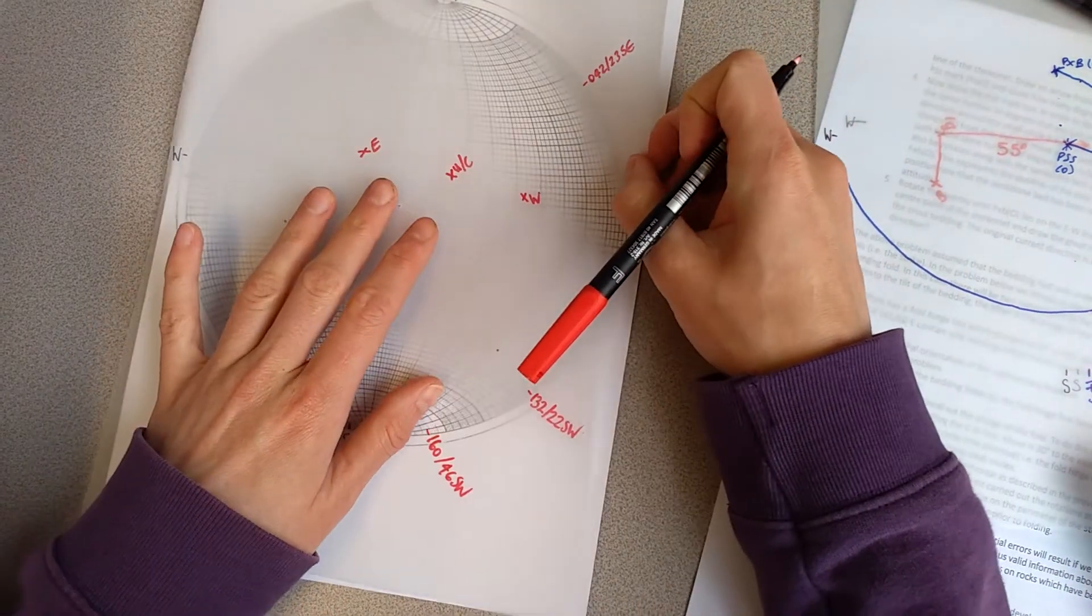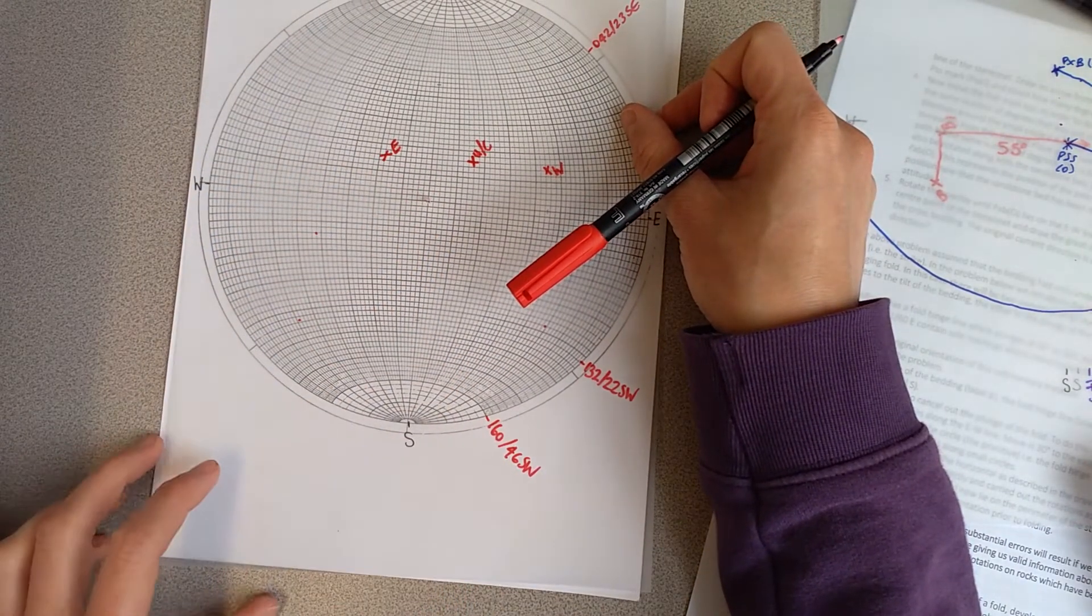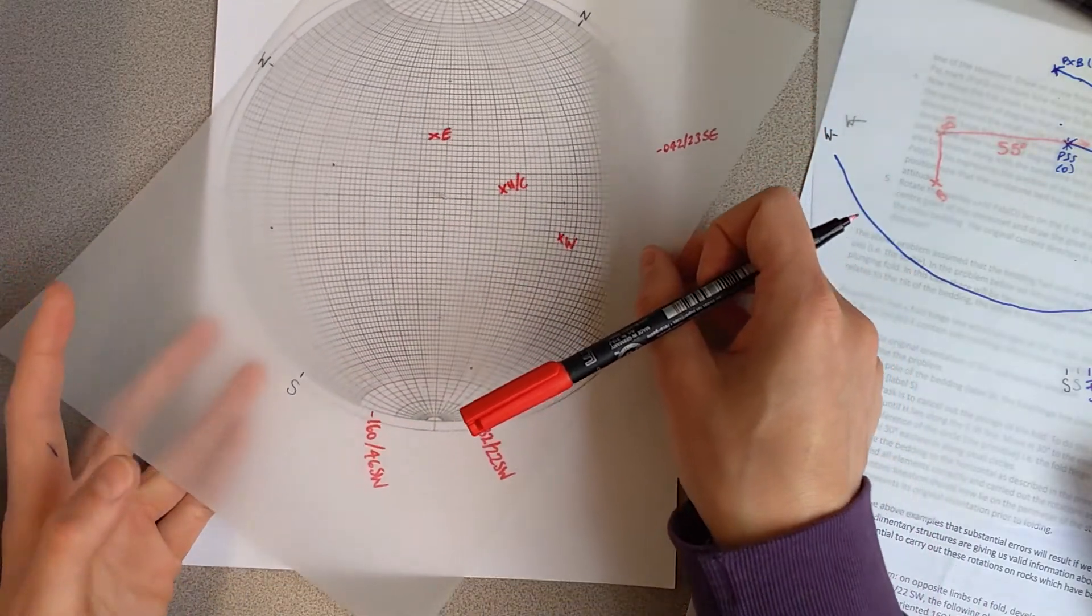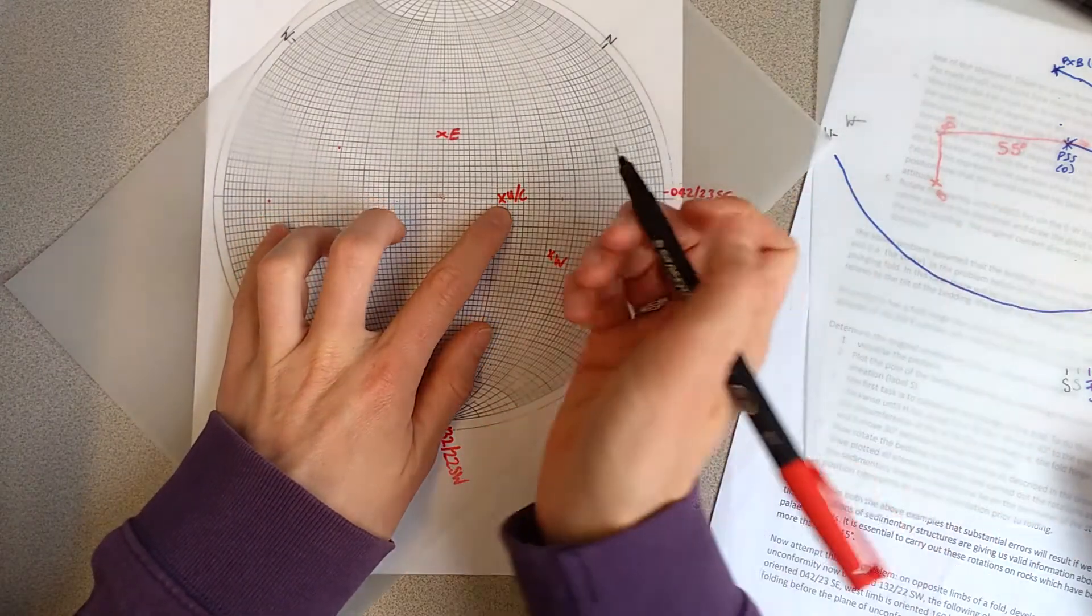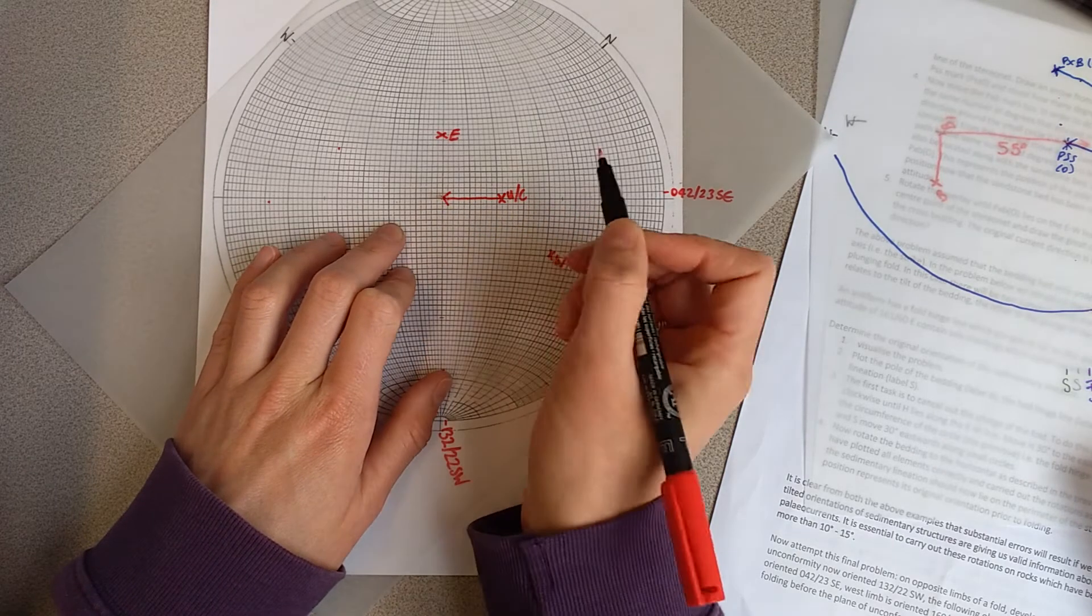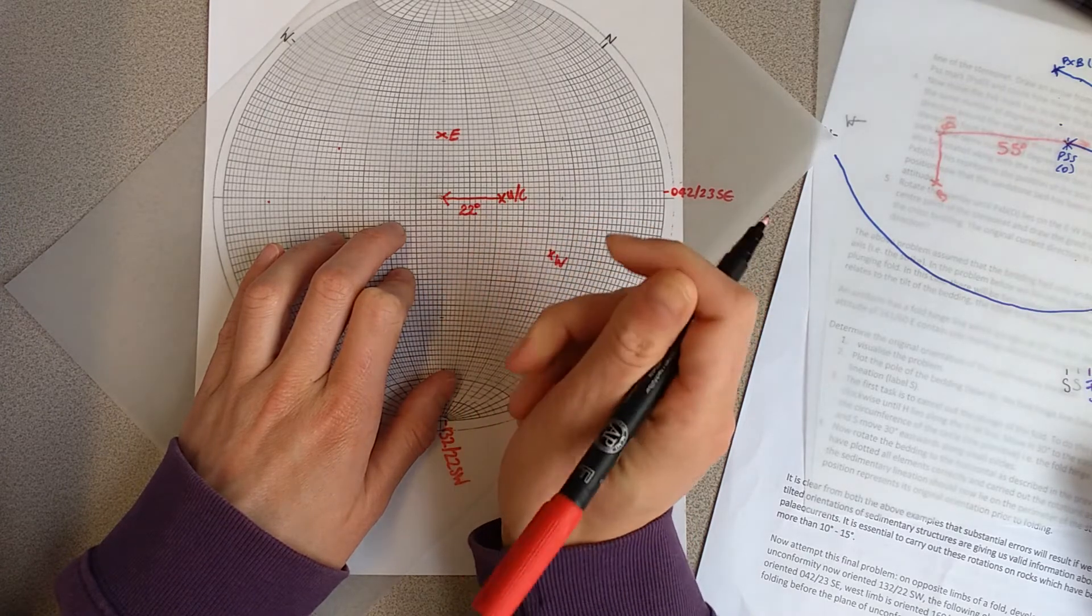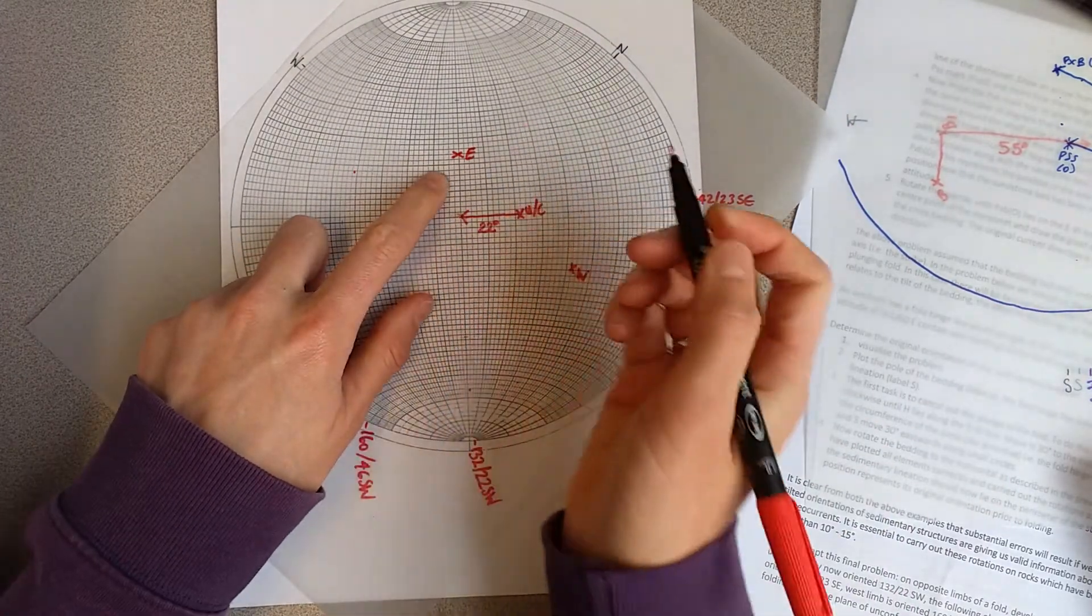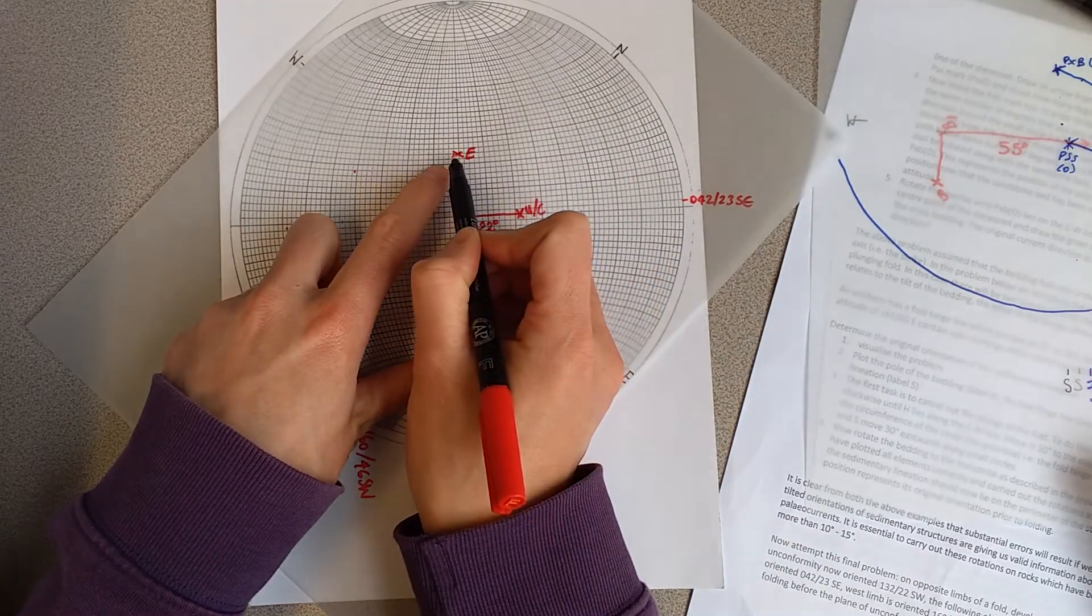Now, as I said before, what we want to do is cancel out the tilting of the unconformity. To do that, we're going to rotate the pole of the unconformity to the east-west line, and then restore that back so the pole is vertical and therefore the plane is horizontal. That has been restored 22 degrees because that's the amount it's dipping. In exactly the same way, we're going to move these east and west limbs by exactly the same amount along the small circles.